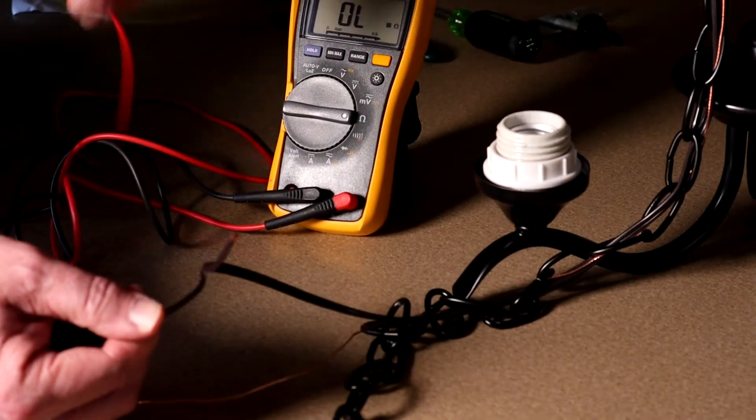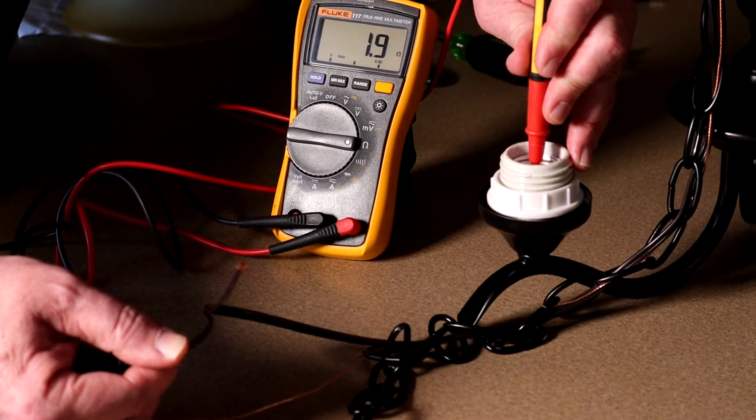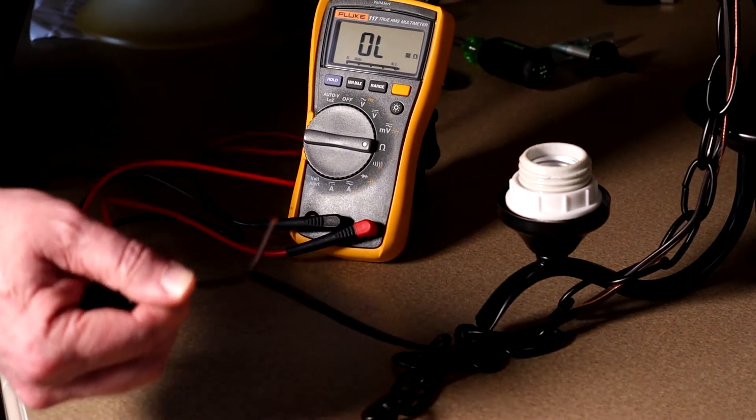The smooth wire to the center post continuity. That's going to be your black wire.